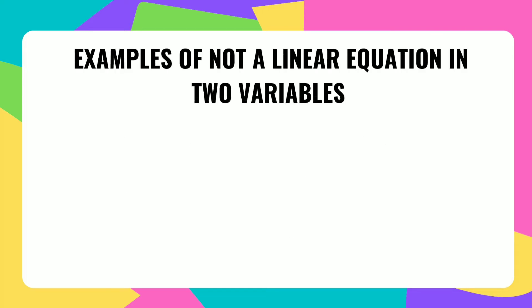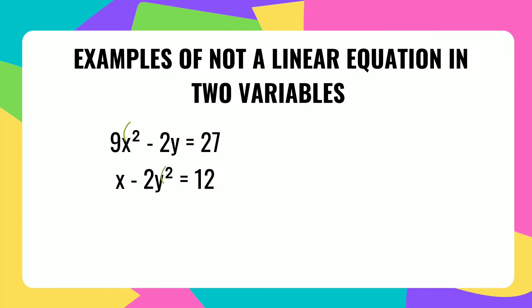These are examples of equations that are not linear equations in two variables: 9x squared minus 2y equals 27, and x minus 2y squared equals 12. These are not linear because the exponents of the variables are raised to 2.